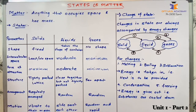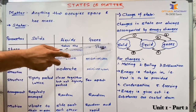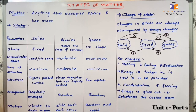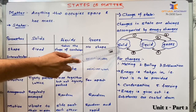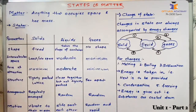When we are going from left to right by providing heat energy to the substances, the density of the substances also decreases. So solids have maximum density, whereas the gaseous state has minimum density.